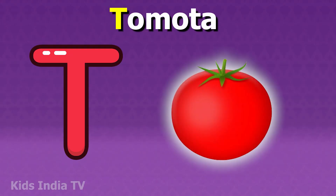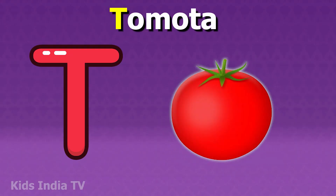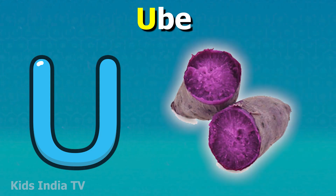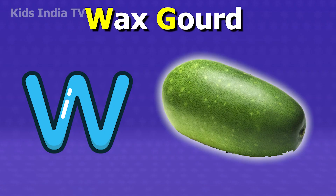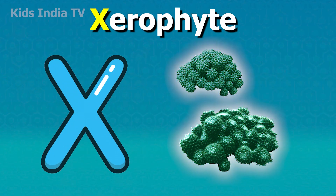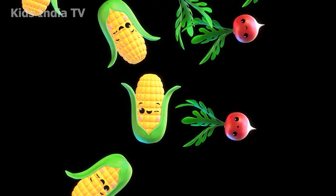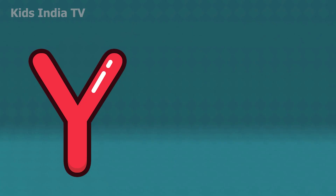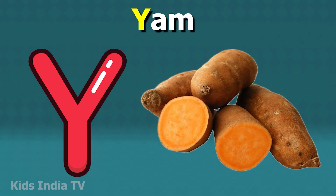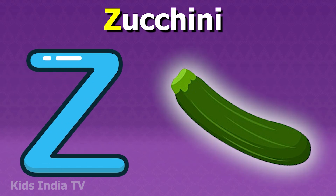T for tomato, U for ube, V for vanilla, W for wax gourd, X for ximenia, Y for yam, Z for zucchini.